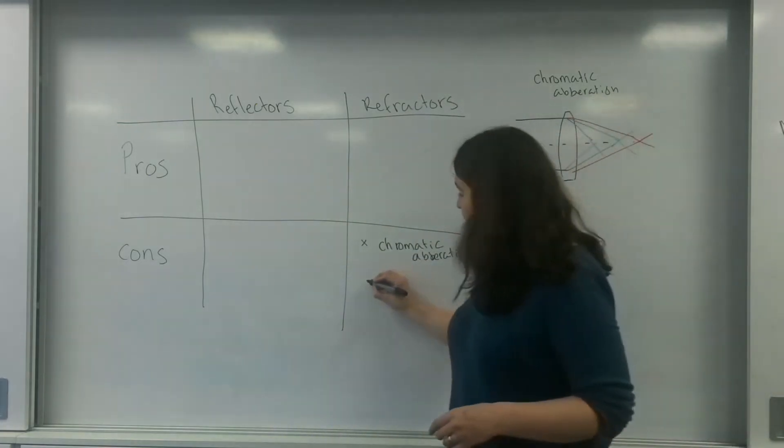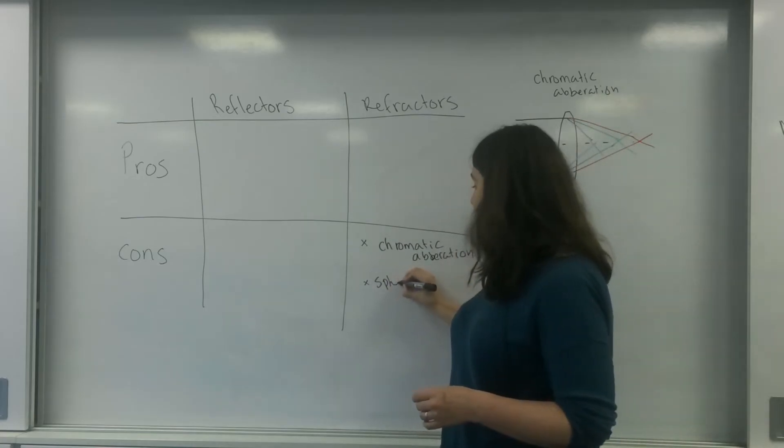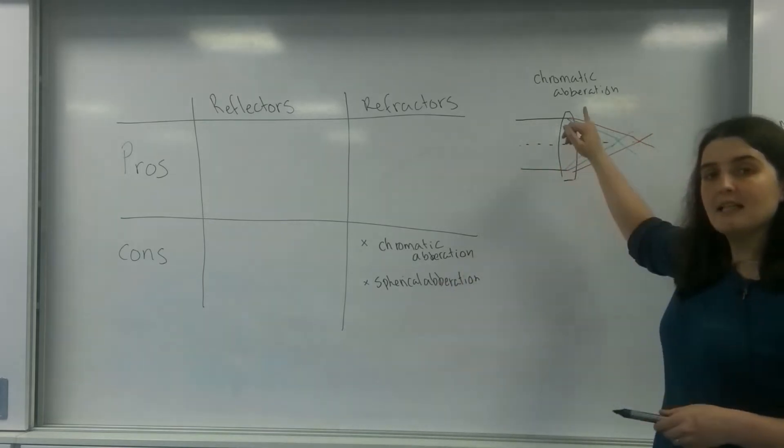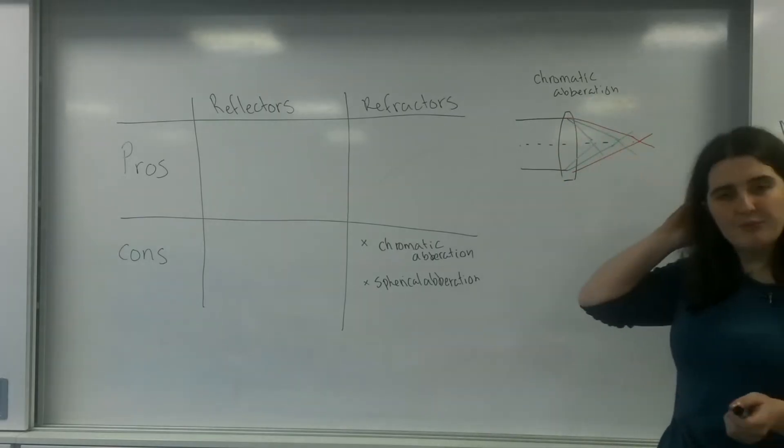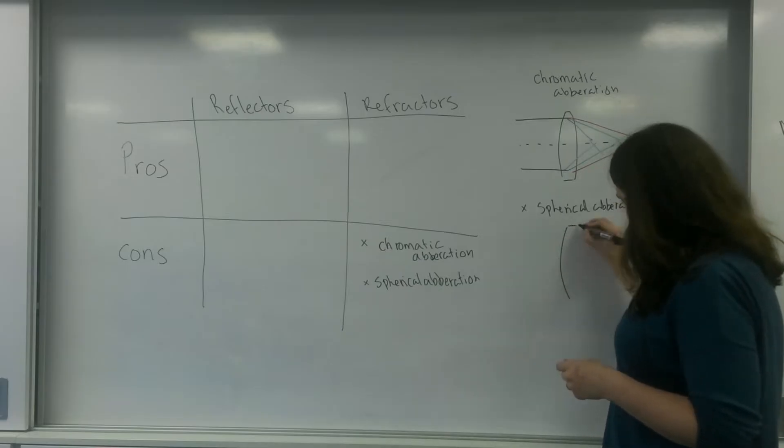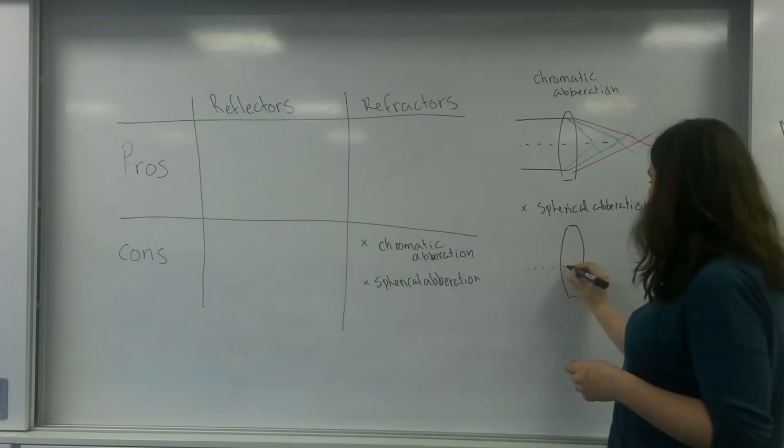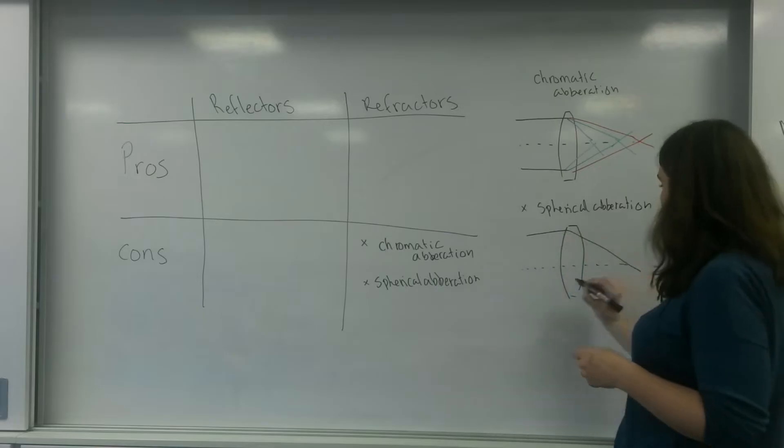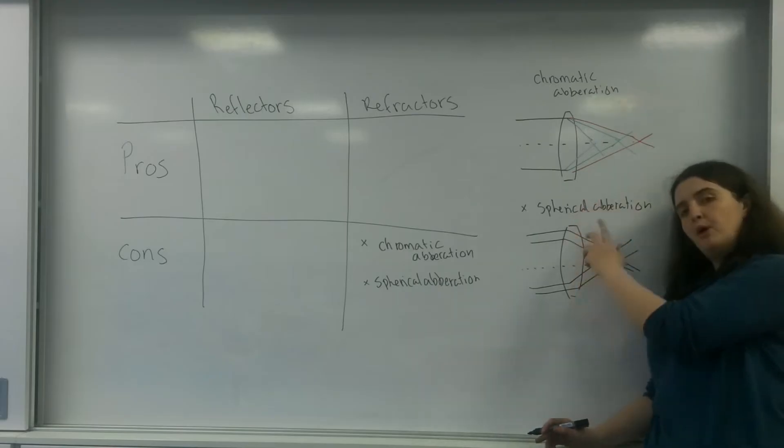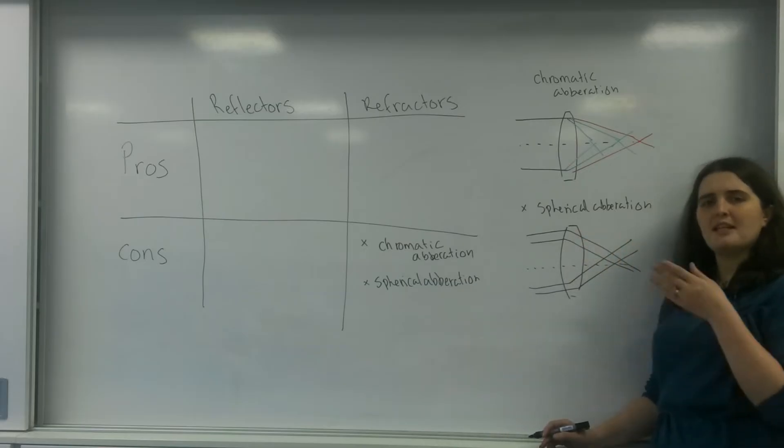Another issue that refractors can suffer with is spherical aberration. And it's all to do with this lens. If this lens is not perfectly parabolic, you don't get this really nice focal point. This is not perfectly parabolic. What happens is they don't all meet on the principal axis here. And it's all because unless this is parabolic, you do not get them all meeting at one, converging at one point. So you don't get a clear image. And this can end up with a sort of fuzzy image.